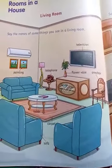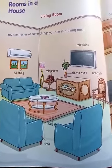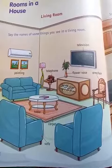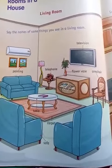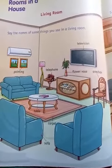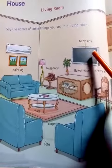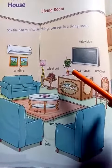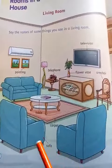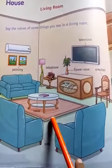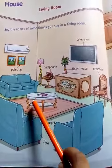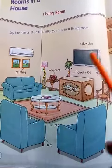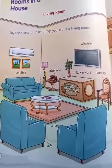Kitchen. Say the names of some of the things that we see in a living room. What we see in a living room: first, television, armchair, flower vase, sofa, carpet, table, telephone, painting.